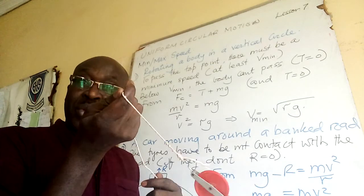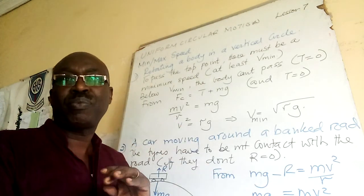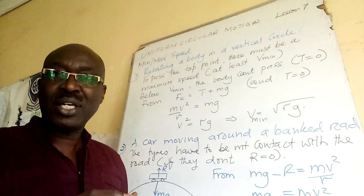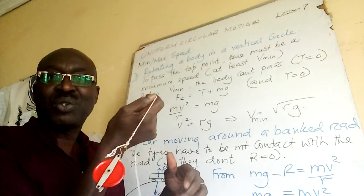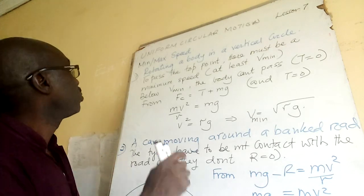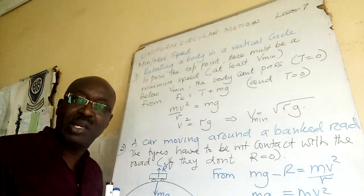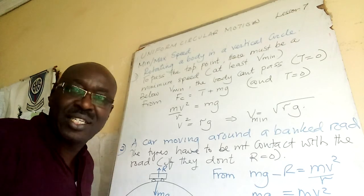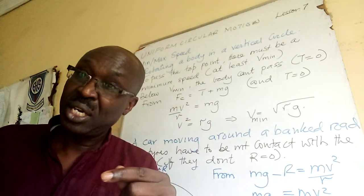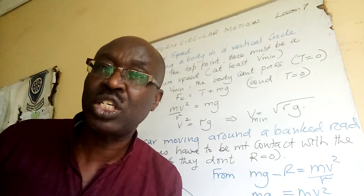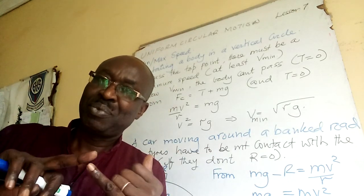When rotating a body in a vertical circle, there must be a speed which allows the body to go over the top. Otherwise, if there is no tension in the string, it cannot pass. There must be some tension in the string to pass the top point — we talk of a minimum speed. Below that speed, the body cannot pass the top point.